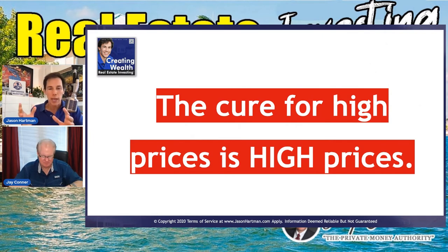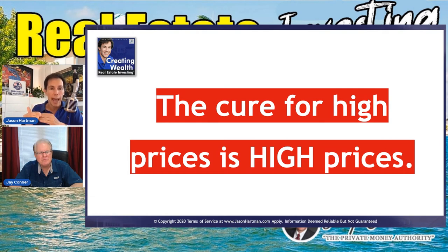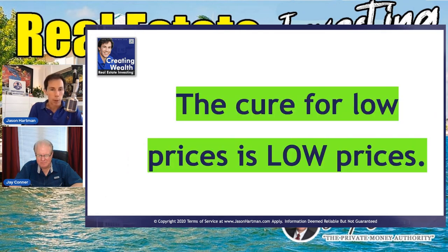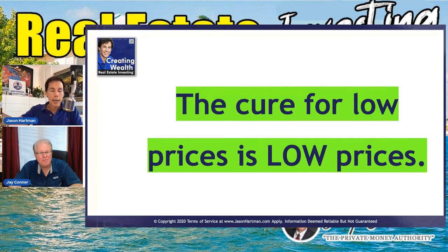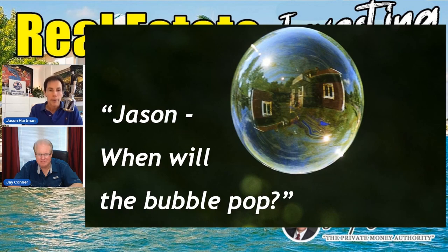There's an old saying in economics: the cure for high prices is high prices. One interpretation is that when prices are high, demand will fall off and prices will come down — the most basic rule of supply and demand. The corollary is: the cure for low prices is low prices. If prices are too low, the market starts buying up all the widgets, all the houses, and sellers raise prices. This is constantly happening as the market regulates itself. Right now the most common question on people's minds is: are we in a bubble, and if so, when will it pop?